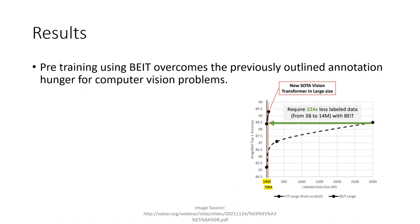What are the results of BEIT? Pre-training using BEIT overcomes the previously outlined annotation hunger. As seen in the graph, BEIT requires 224 times less labeled data. Whereas standard approaches reached 88.5% top-1 accuracy with almost 3 billion images, BEIT achieves the same with only 14 million images.